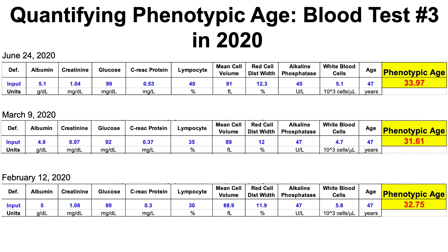Every February, around mid-February, I get some kind of respiratory infection — up until this year it was likely influenza. I thought I had coronavirus at almost exactly this time in February, but the antibody test came back negative. I had a cough and no fever, but that still increased my white blood cells to higher than my average of around 4.5, resulting in a higher than expected phenotypic age. A month later, once I recovered, white blood cells came down and my phenotypic age improved by a little more than a year.